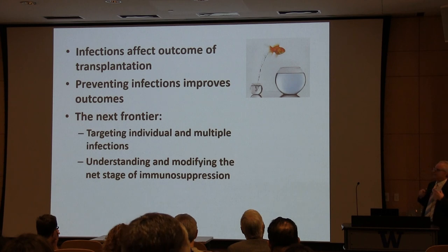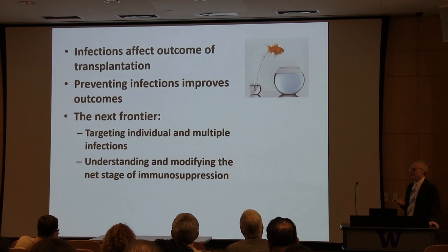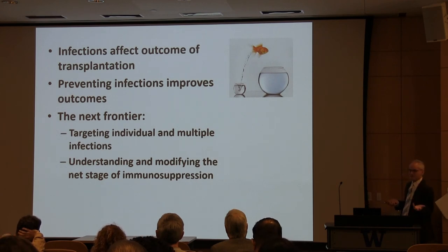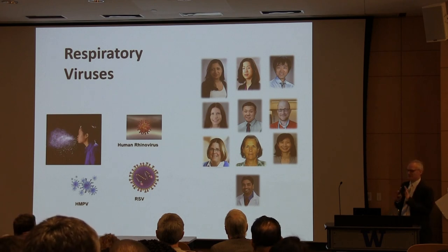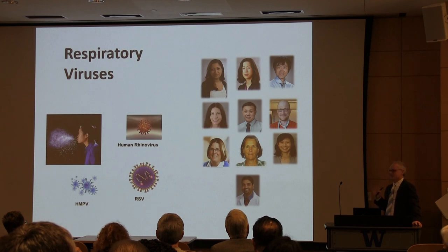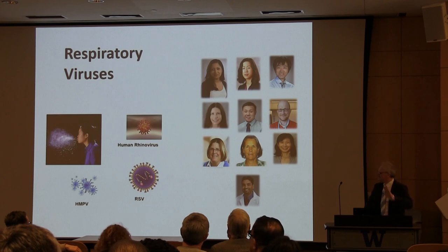To summarize: infections affect the outcome of transplantation; preventing infections improves outcome, and it's worth doing. The next frontiers involve targeting individual and multiple infections through immunotherapies and drugs, and also understanding and modifying the net stage of immunosuppression. My other passion is respiratory viruses — I was not able to talk about this, but it's a fascinating and very important area for this patient population, with an interesting story to be told for another time.